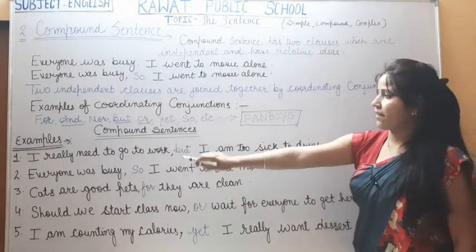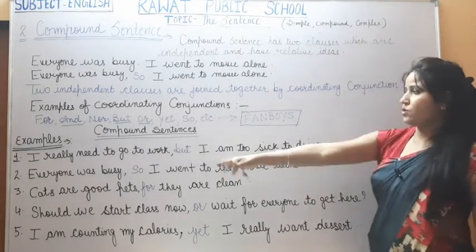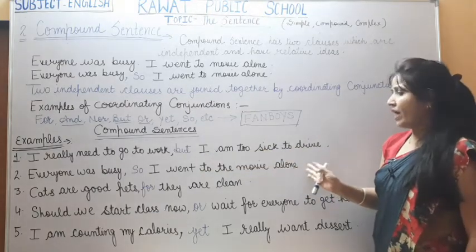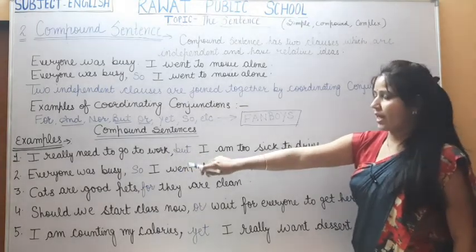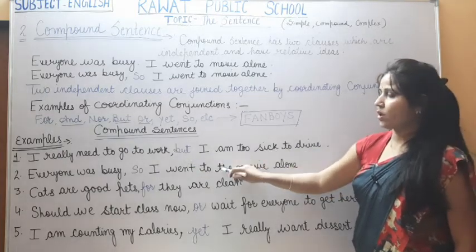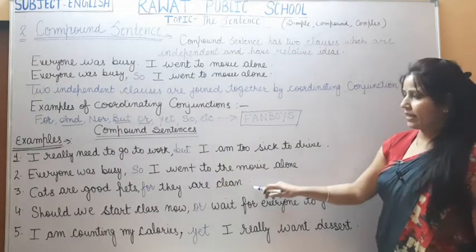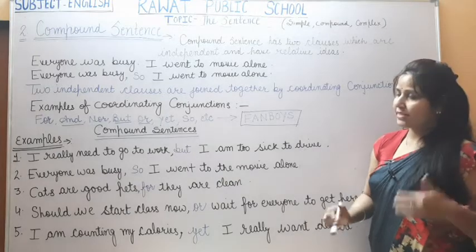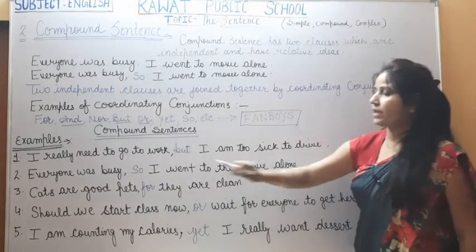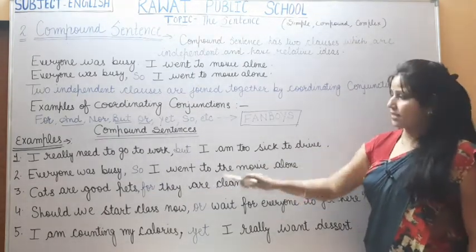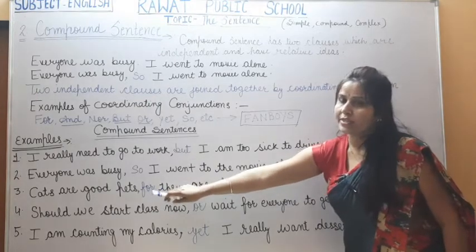Second example: 'Everyone was busy, so I went to the movie alone.' Everyone was busy — that's why I went to the movie alone. 'So' is the coordinating conjunction connecting both independent clauses. Third: 'Cats are good pets, for they are clean.' The coordinating conjunction 'for' is used to connect both independent clauses.